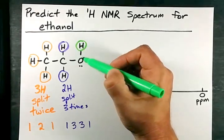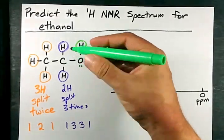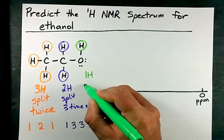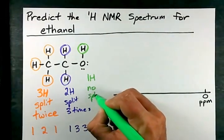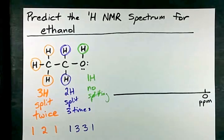And this hydrogen, because it is buffered by this O, is not going to be split at all. It is one hydrogen, and there is no peak splitting here.